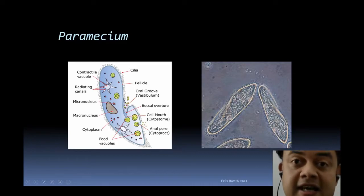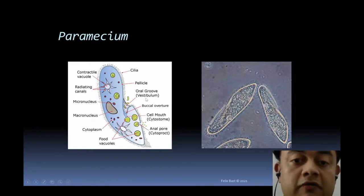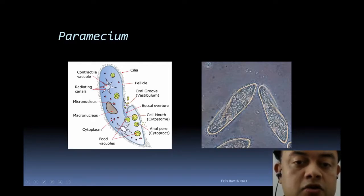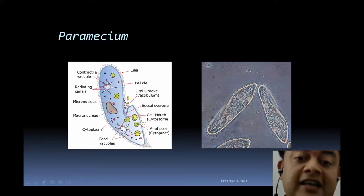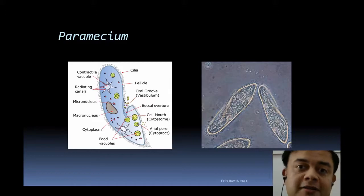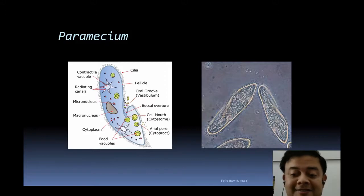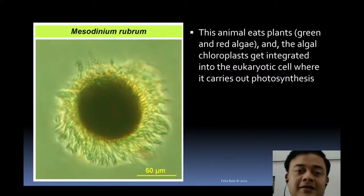Paramecium, as an example of alveolates, has cilia, a contractile vacuole, and a primitive mouth and anus. It has an oral groove, vestibulum with buccal aperture, a cytostome — which is the cell mouth — and a cytoproct or anal pore. It is essentially a single-celled organism with both a mouth and a rectum, which is remarkable.